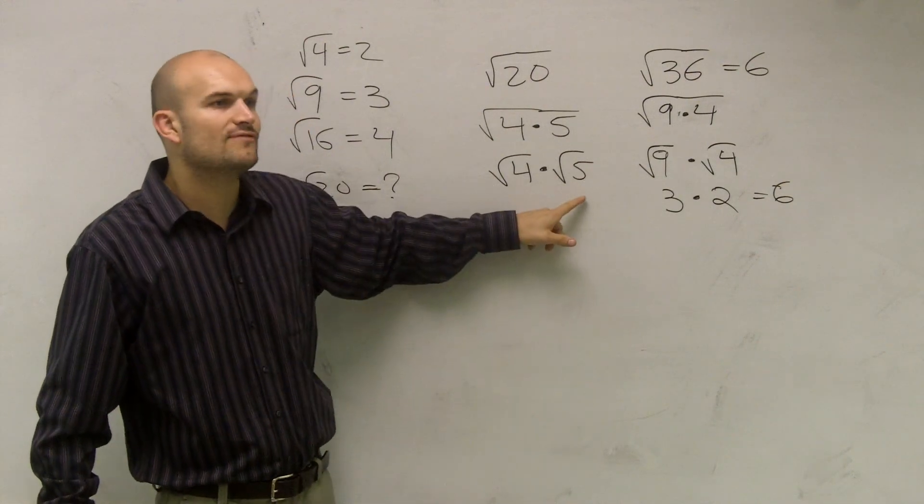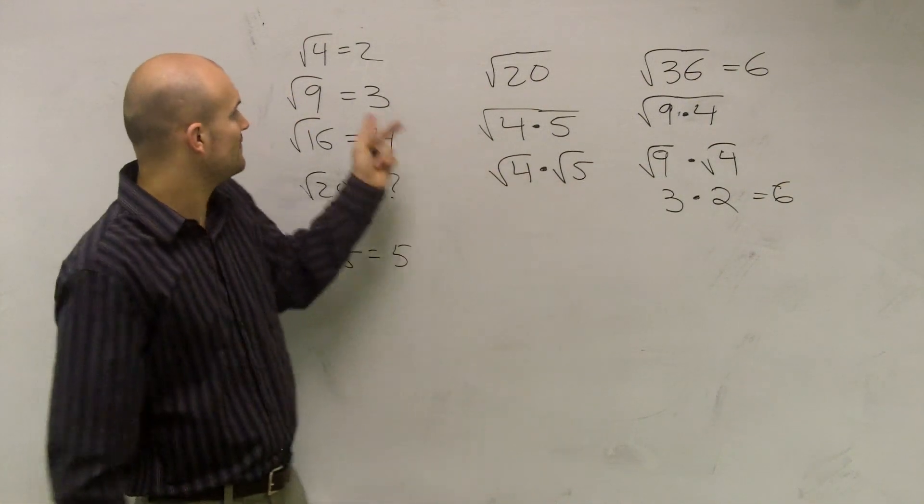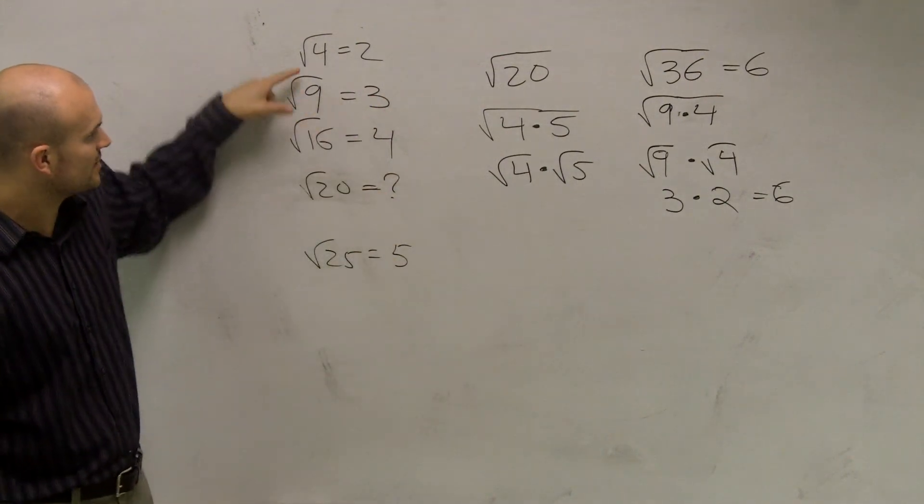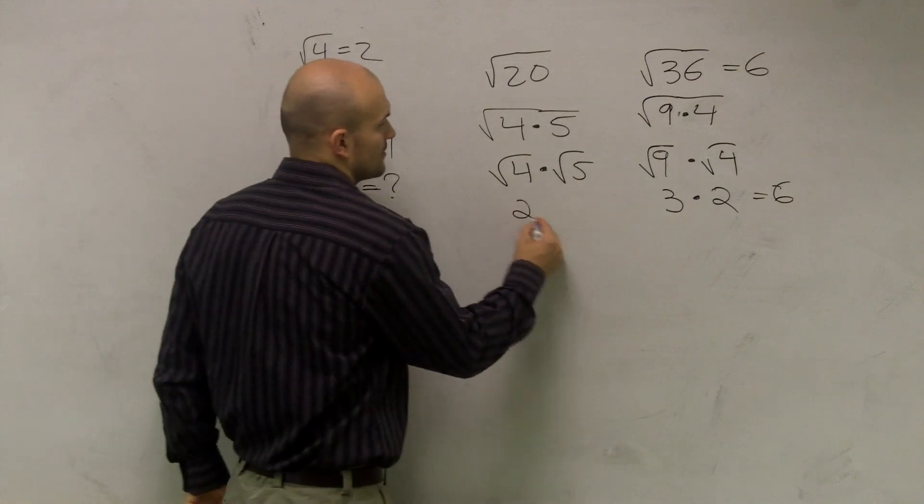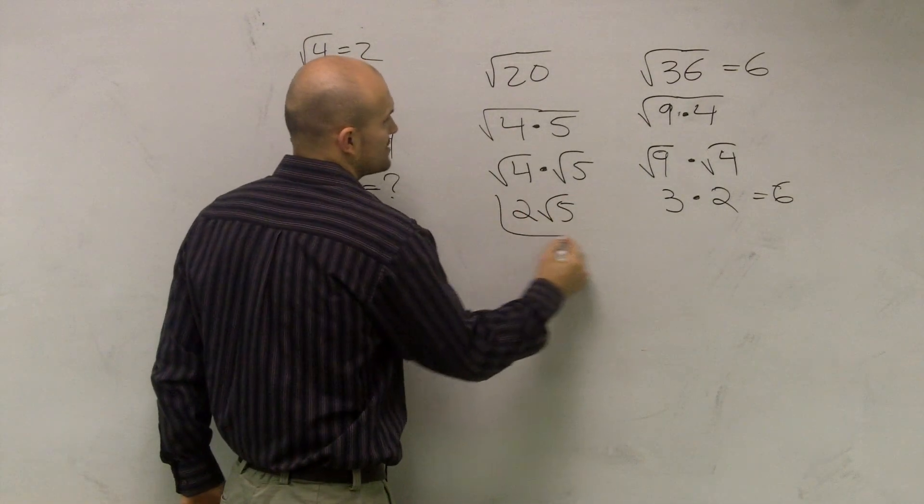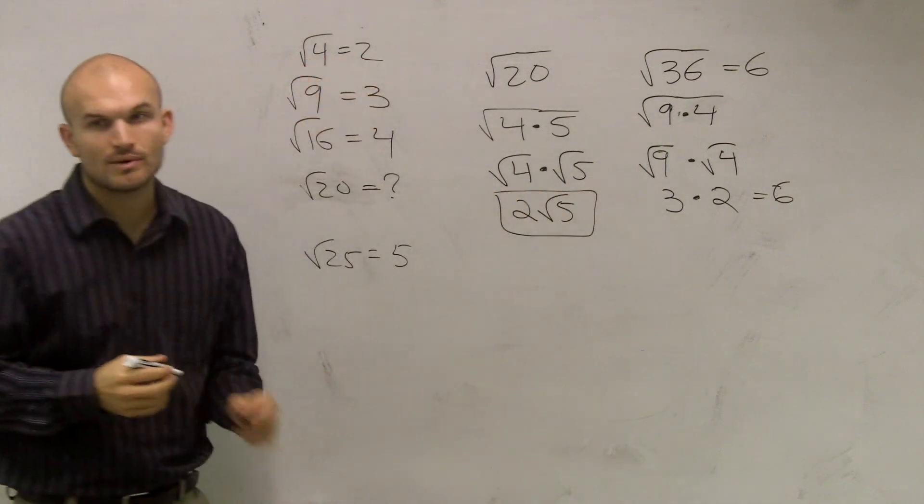Now, do I know what the square root of 5 is? No. The square root of 5 is not one of those answers, right? The square root of 5, we only go up to 4, then 9. But do I know what the square root of 4 is? Yeah, it's 2. So, therefore, your answer for number 1 is going to be 2 radical 5.